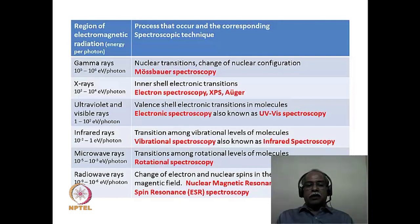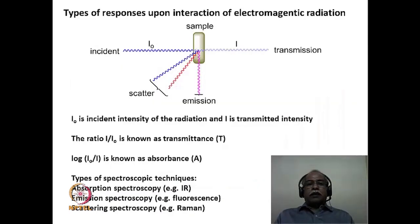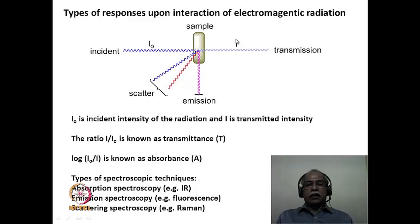NMR and ESR are the techniques responsible for this, and we will deal with NMR in much more detail in this course. This slide tells us about the responses upon interaction of electromagnetic radiation — when a sample is excited by electromagnetic radiation, what processes can occur? Consider incident light I₀ falling on a sample. The substance can absorb certain amount of this light and then transmit the remaining light. I is the intensity of the transmitted light, and I₀ minus I would correspond to the absorbance — the intensity being absorbed by the sample itself.